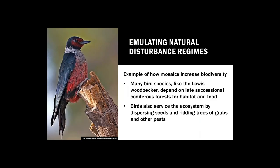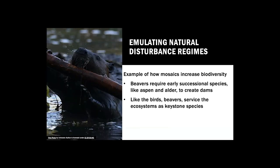More examples of emulating natural disturbance regimes: many species of bird depend on late-successional coniferous forests for habitat, which provides cavities and food providing seed, nuts, and berries. Birds also service the watershed by dispersing vegetation, seeds, and ridding trees of grubs and other pests. Contrary to birds, beavers need early-successional trees such as alders and aspens to create dams. Through the process of dam building, beavers assert their roles as keystone species — they slow stream velocity, increase water storage capacity in adjacent stream banks, and establish woody habitats for aquatic biota. Furthermore, beavers and birds create a positive feedback within their communities to help sustain resilient ecosystems.